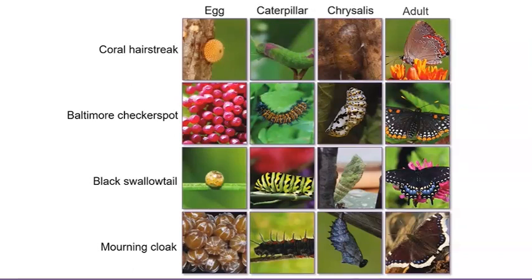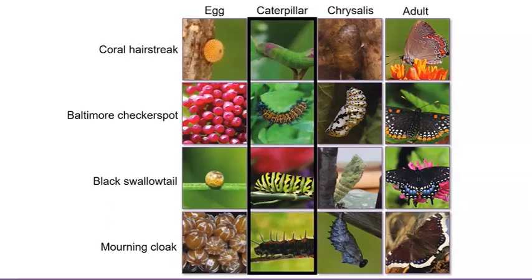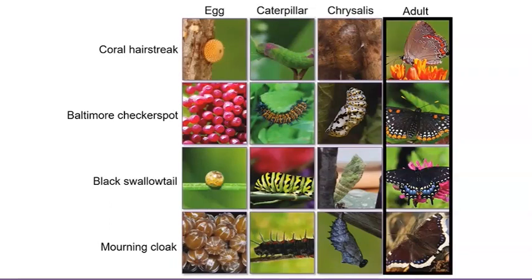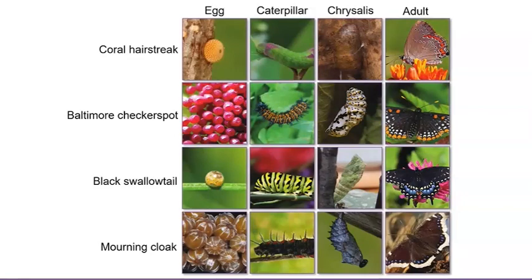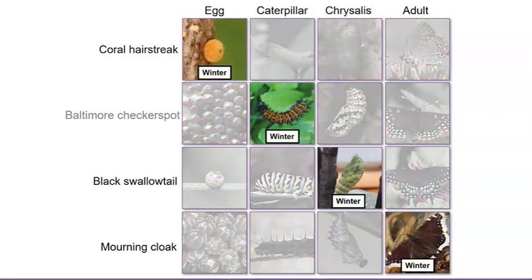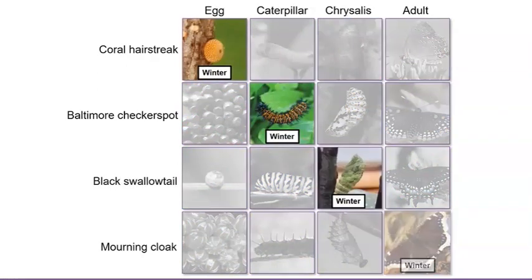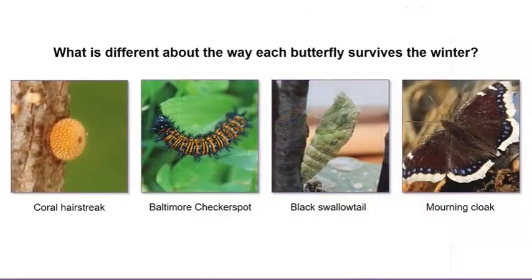I noticed that the butterflies all go through the same life cycle stages. They all go from being an egg, to a caterpillar, to a chrysalis, to an adult — even though they go through these stages at different times of the year. In fact, each of these butterflies can survive the winter by being in a different stage of its life cycle. Maybe different butterflies can survive better in different life cycle stages, or maybe they survive in different ways depending on where they live and their characteristics. And we already know our monarch butterfly migrates to survive the winter.